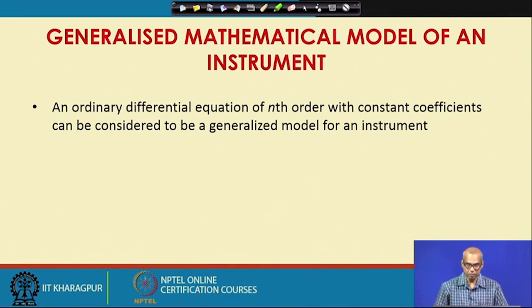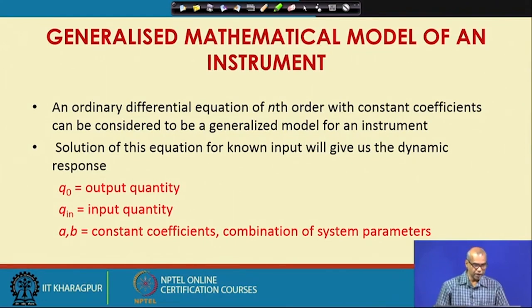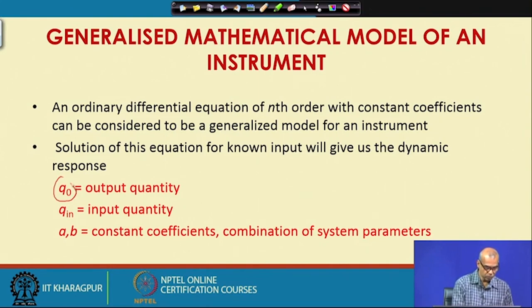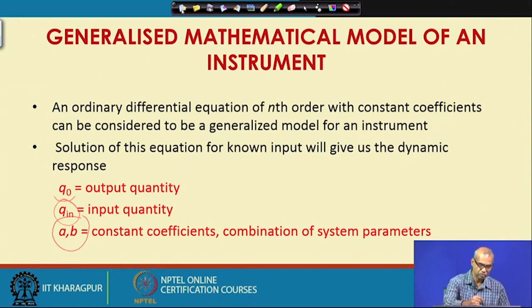If we consider any general instrument, we assume that an ordinary differential equation of nth order with constant coefficients will relate the input to the instrument and the output from the instrument. Let us write down an nth order general ordinary differential equation with constant coefficients. Let q₀ be the output from the instrument, qᵢₙ be the input to the instrument, and a, b are the constant coefficients — essentially combinations of system parameters. Different instruments will have different a's and b's.